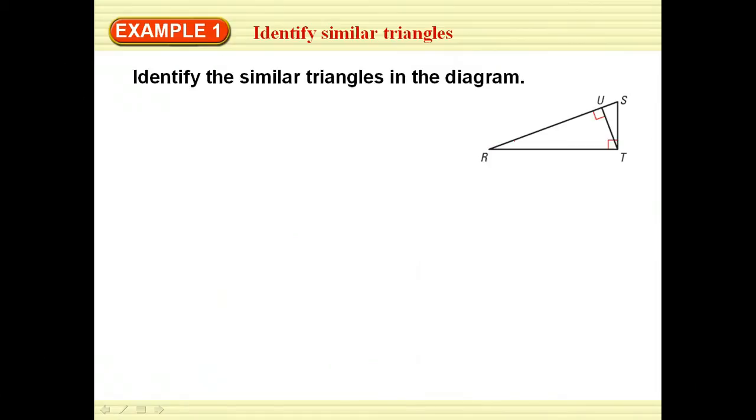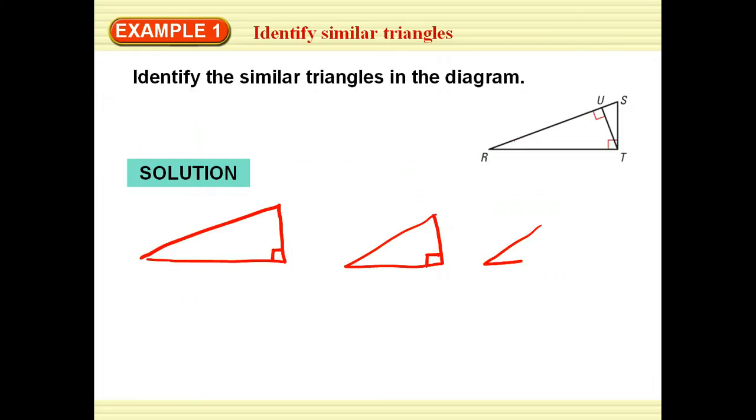So let's identify the similar triangles in this diagram. Notice we have a right triangle with right angle T, with an altitude TU drawn to the hypotenuse. What I'm going to do is set up three triangles. I'm going to set up a large right triangle. Now I'm going to label these so I can get my corresponding parts. This is R, S, T with the right angle at T.